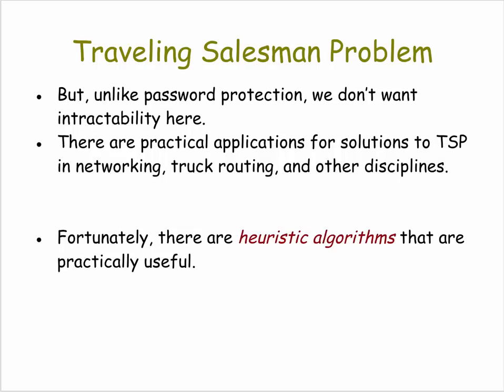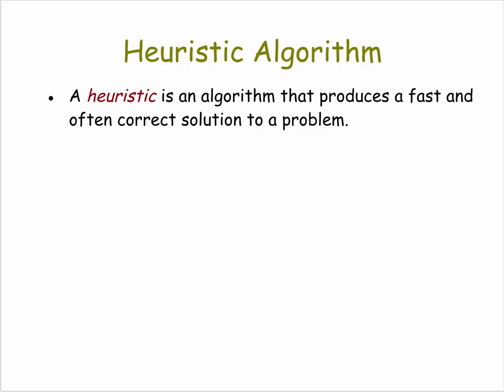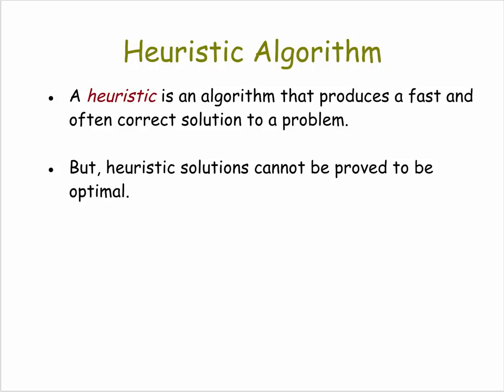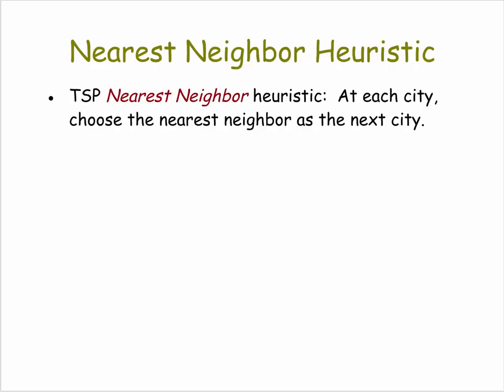Fortunately, there are what are known as heuristic algorithms that we can use to solve this problem in a practical way. A heuristic is an algorithm that produces a fast, correct solution to the problem, but it can't be guaranteed to be optimal. You would get an effective, efficient route through the n cities, but it would not necessarily be the optimal route.